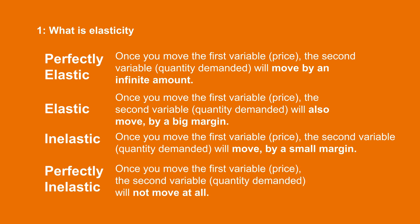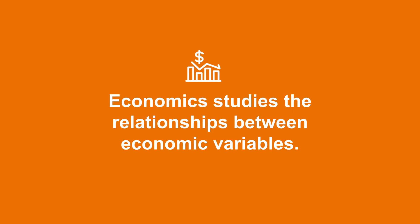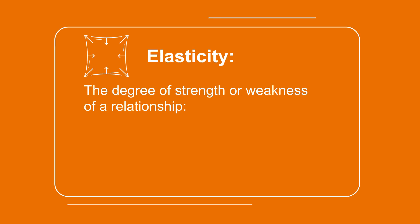If the relationship is completely inelastic, once you move the first variable — price — the second variable — quantity demanded — will not move at all. Economics studies the relationships between economic variables. Elasticity is the degree of strength or weakness of a relationship — for instance, between quantity demanded and price.